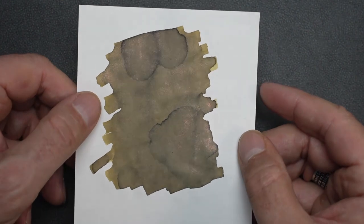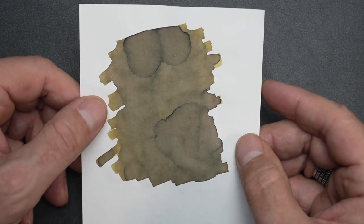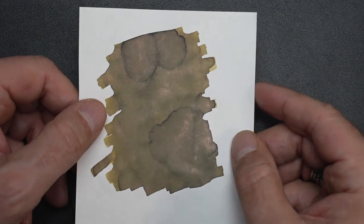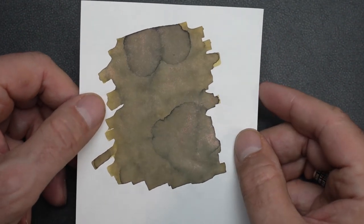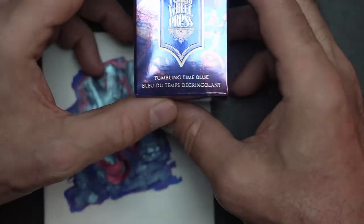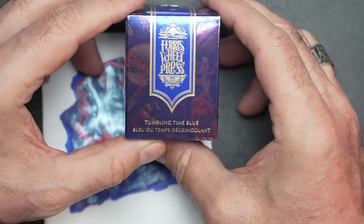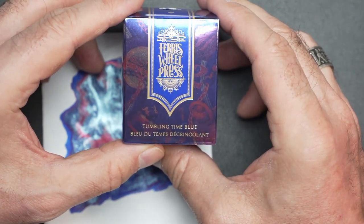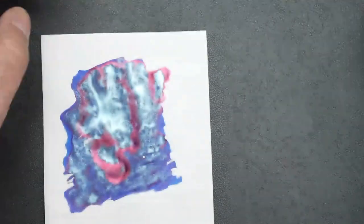That's a very nice green gold. Very nice. And that rose shimmer gives it just another touch. Next on my list is an ink by the name of Tumbling Time Blue. Here's the box. And that box gives you a very good idea of what the ink looks like. It's really spot on because look at the swatch.